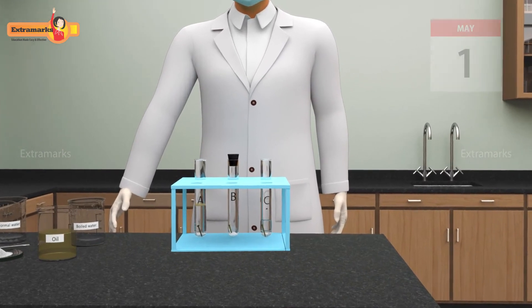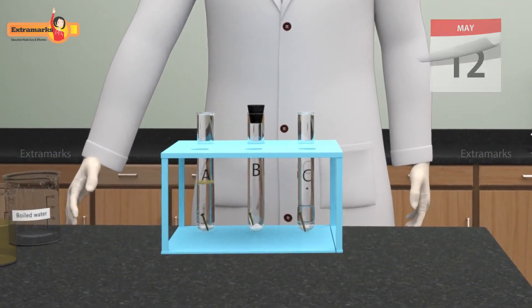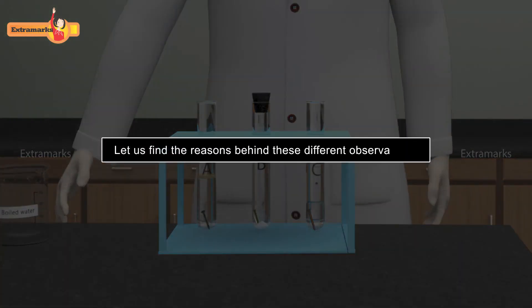Keep the test tubes aside for a few days. Observe the test tubes after a few days. No rust is formed on the nails kept in test tubes A and B, while rust can be seen on the nail kept in test tube C. Let us find the reasons behind these different observations.